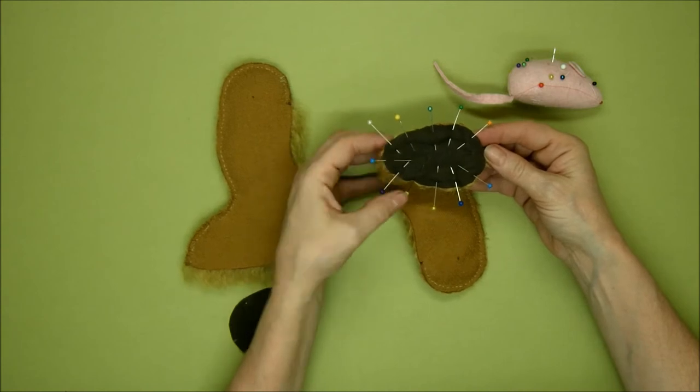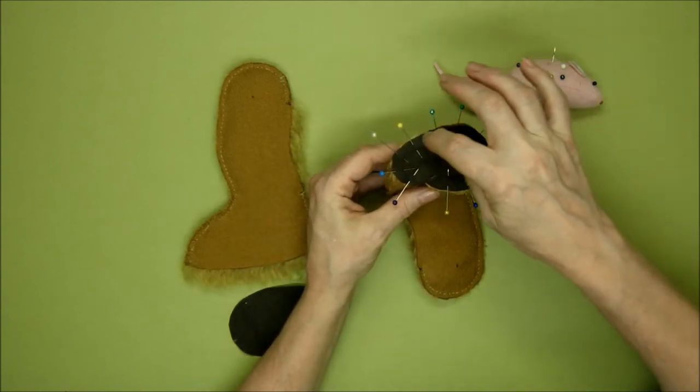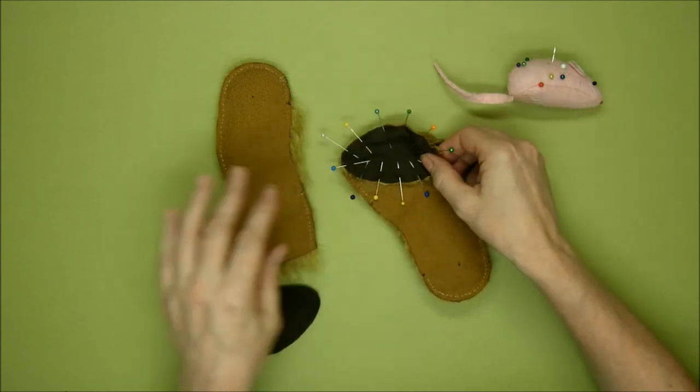And then once that's all done, we're going to sew all the way around the outside and back to there, and repeat that with the other foot pad.